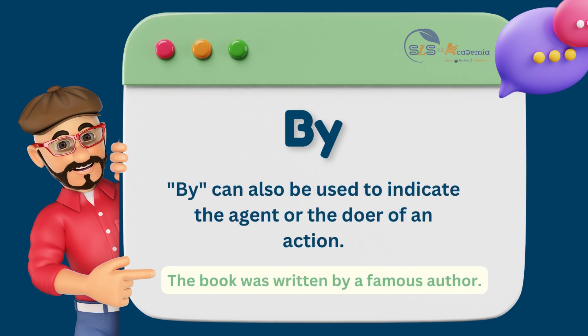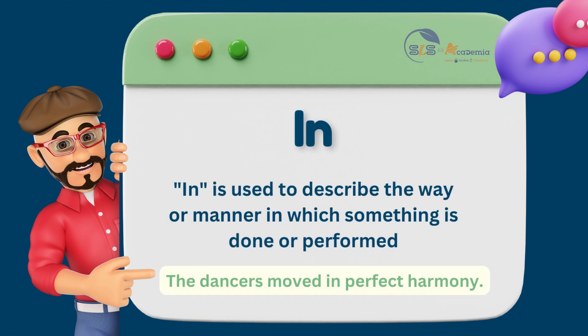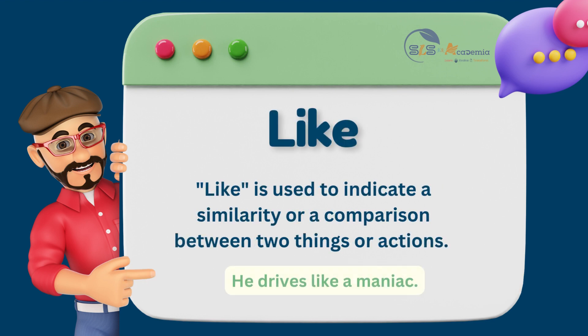'By' can also be used to indicate the agent or doer of an action, as in 'the book was written by a famous author.' 'With' is used to indicate the tool, instrument, or material used to do an action. For example, 'she cuts vegetables with a knife.' 'In' is used to describe the way or manner in which something is done. For example, 'the dancers moved in perfect harmony' means they moved in a coordinated and synchronized way. 'Like' is used to indicate a similarity or comparison between two things or actions. For example, 'he drives like a maniac' means his driving style is similar to that of a maniac.